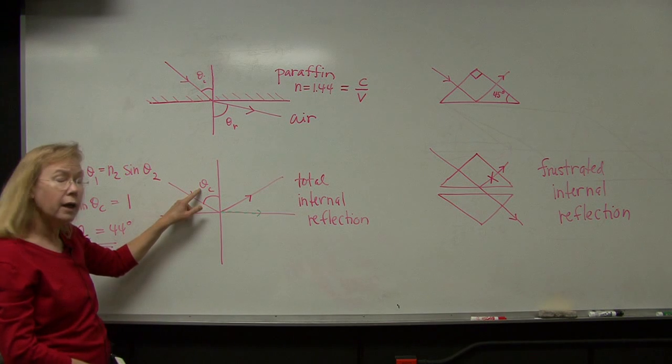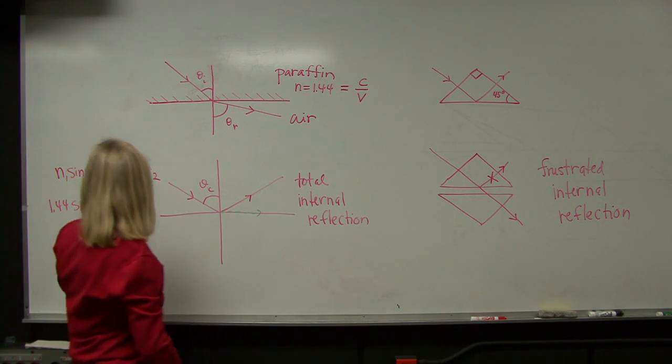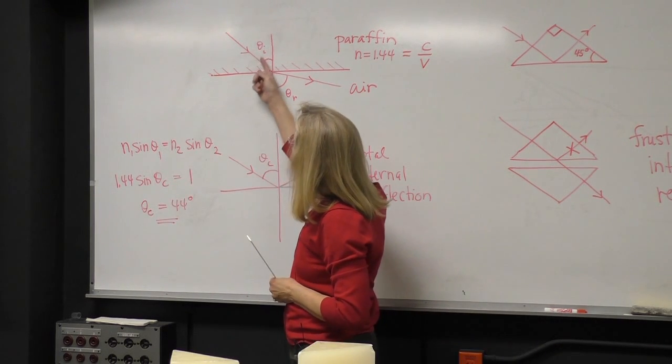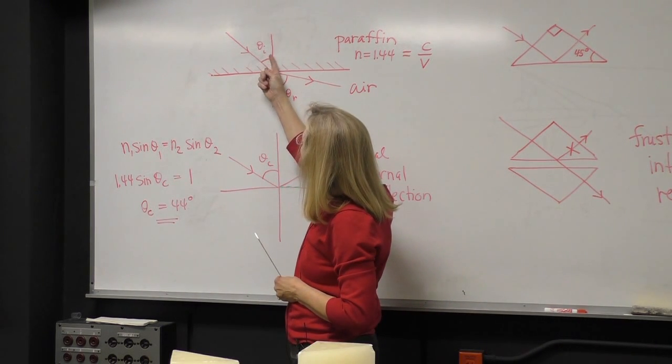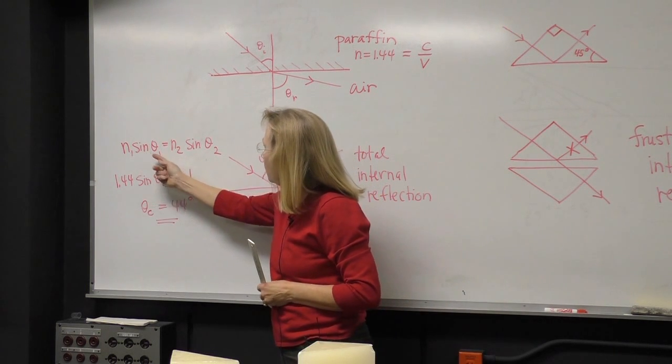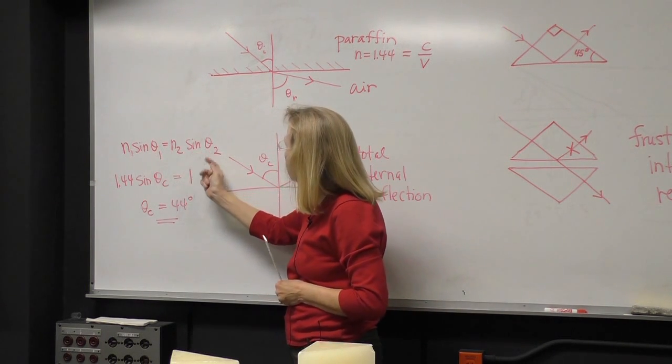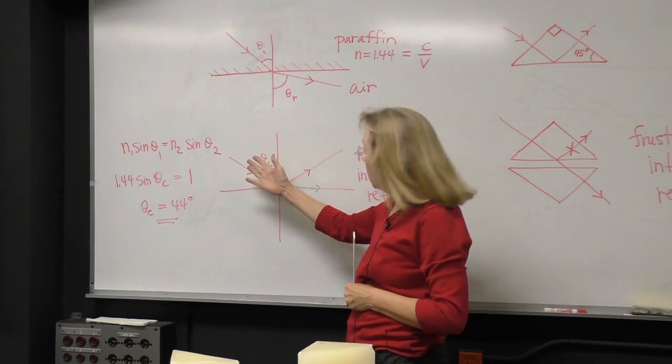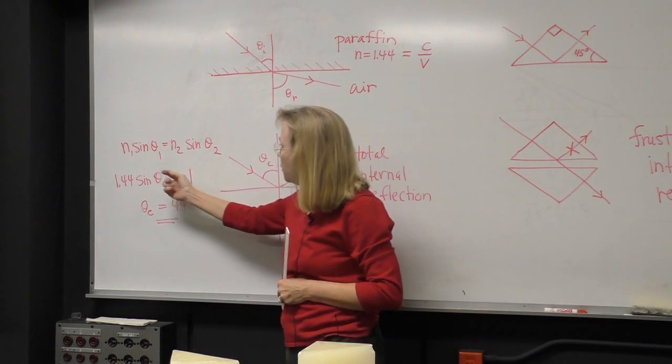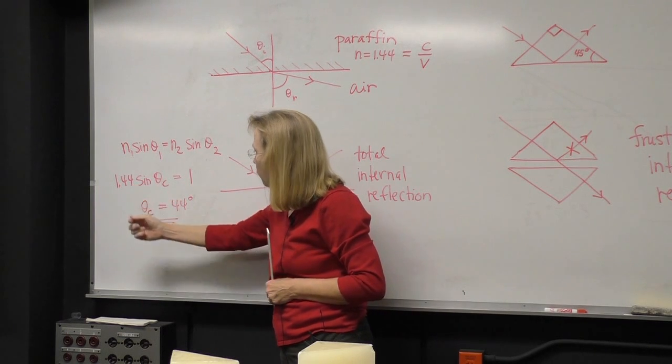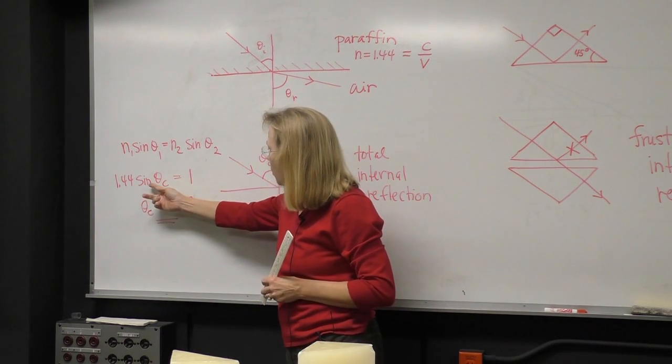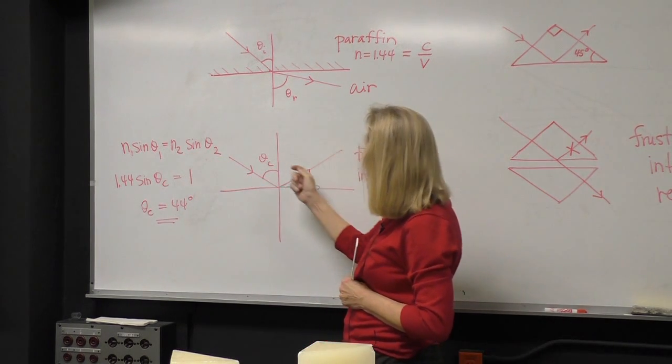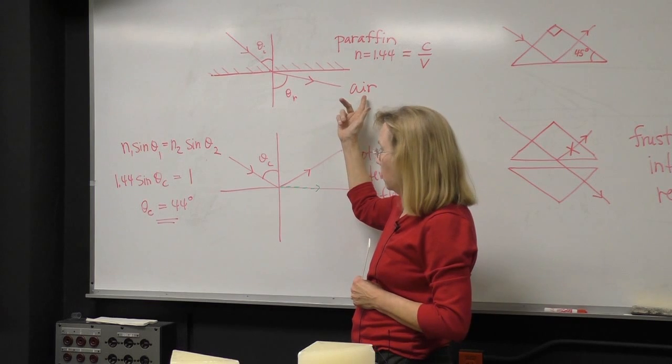So we can actually calculate what this critical angle is. We use Snell's law and Snell's law written in terms of the angle relative to the normal is N1 sine theta1 equals N2 sine theta2. And in this case, the medium that the waves are coming from is the slower one where the index of refraction is 1.44. So 1.44 sine the critical angle...